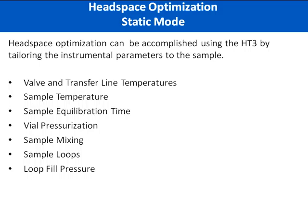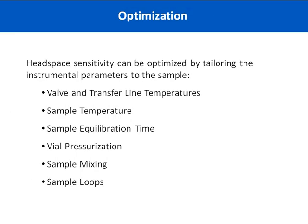Vial pressurization is going to assure that the sample completely fills the sample loop and keeps all samples and standards consistent in pressure — this is extremely important for reproducibility. Sample loops are available in different sizes according to your type of analysis. Currently we have a 100, a 250, and a 500 microliter sample loop, as well as larger loop sizes which can include 1, 2, 3, and 5 mil. The loop fill pressure is the pressure that the sample in the vial is going to decrease to in order to help fill that loop.